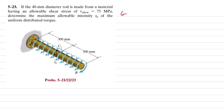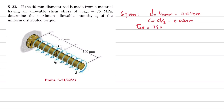In the given data, the diameter of the rod is d = 40 millimeters, which is 0.040 meters in SI units. So the radius c = d/2 = 0.020 meters. We have also been given the allowable shearing stress of 75 megapascals.